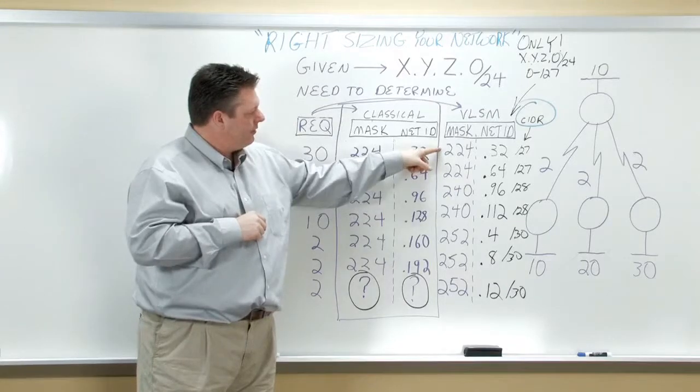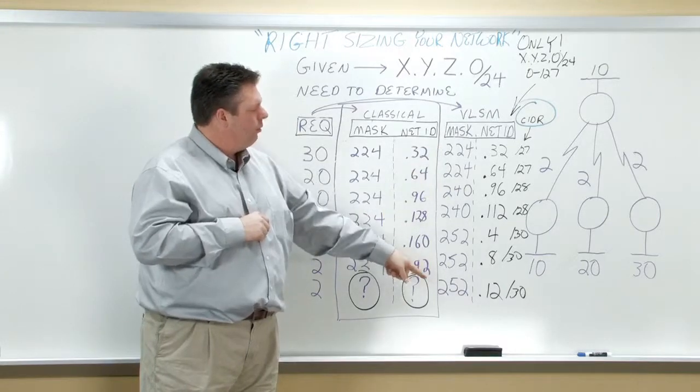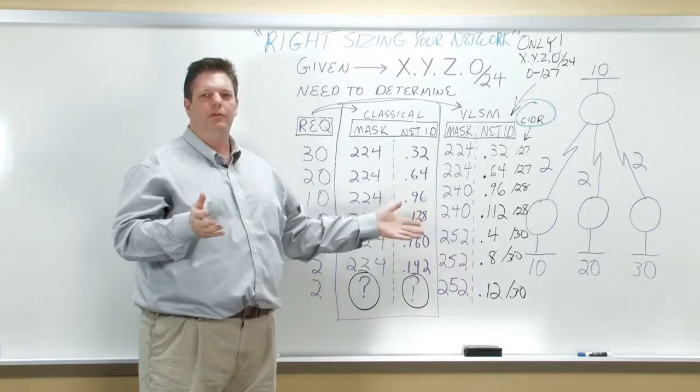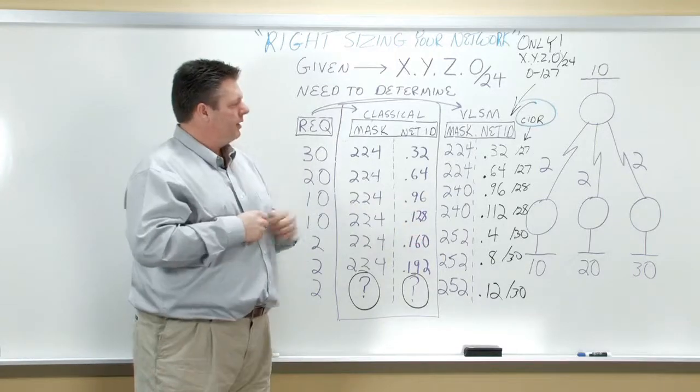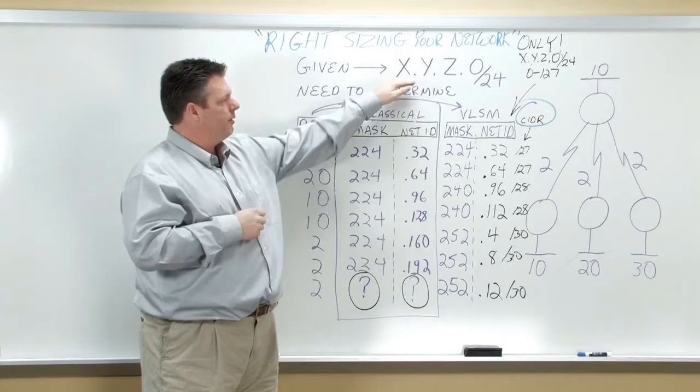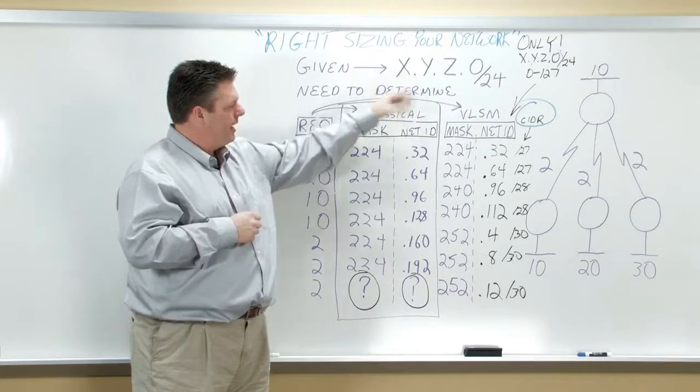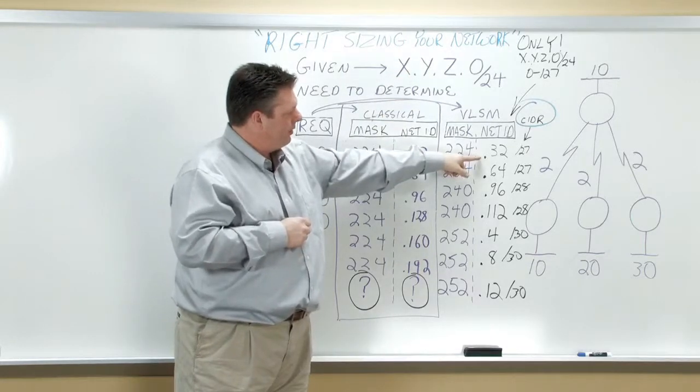From this point on, it's simply applying the network IDs from the prefix I've been given. So if I need a block of 30 hosts, it's a 32 block within my prefix. So it's dot 32, I can take the first one, dot 64.